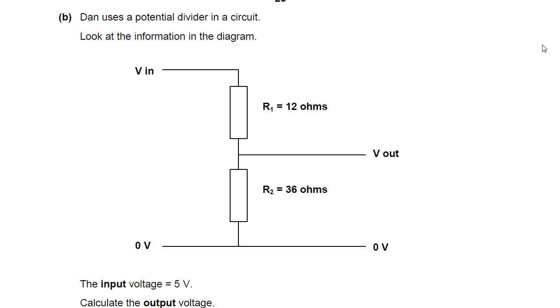Dan uses a potential divider in a circuit. Look at the information in the diagram. So a potential divider. Basically, we're taking the potential between this V in and this 0 volts, the potential difference I should say, between those two points, and we're dividing it between a potential difference across this resistor and a potential difference across this resistor.